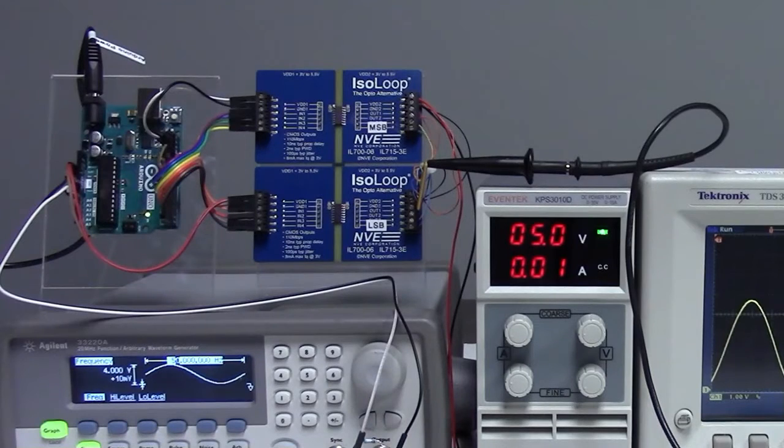We're demonstrating a simple isolation amplifier with our new isolator evaluation boards. An Arduino is connected to a pair of four channel isolators. An R2R resistor array serves as a digital to analog converter for the isolated output. The gain is set by a thumb wheel switch.